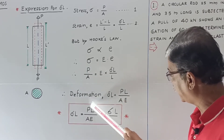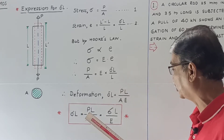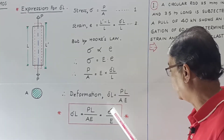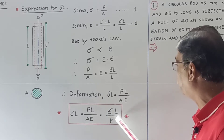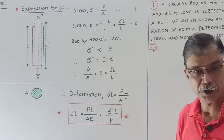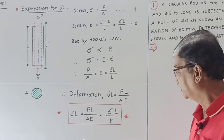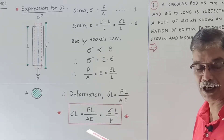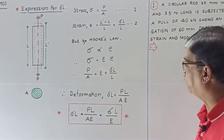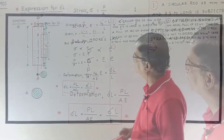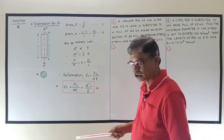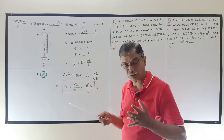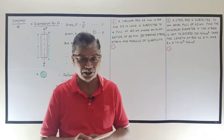Here, P by A is nothing but sigma. Therefore, delta L can also be expressed as sigma into L upon E. This is a very important formula required while solving examples. So, let us start with examples on this particular topic, that is stress and strain.